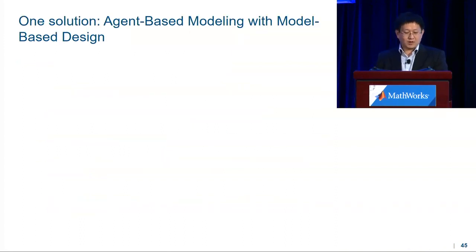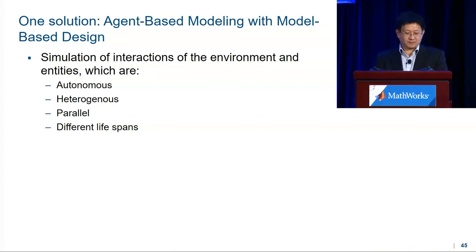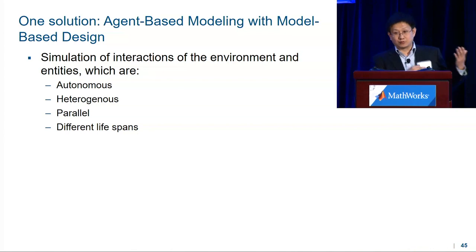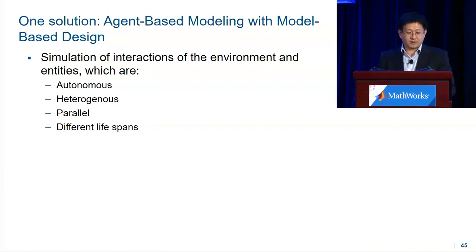One possible solution is called agent-based modeling with model-based design. What is agent-based modeling? It means simulation of interactions between the environment — in this case, the road — and the entities, for example, the cars. These cars are autonomous, heterogeneous, and by nature can be simulated in parallel. They also have different lifespans — cars come and go.